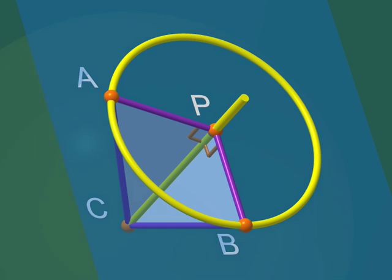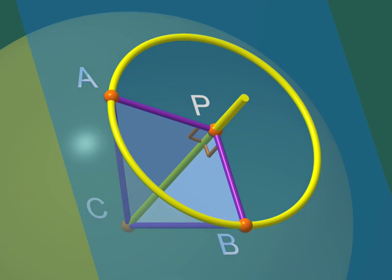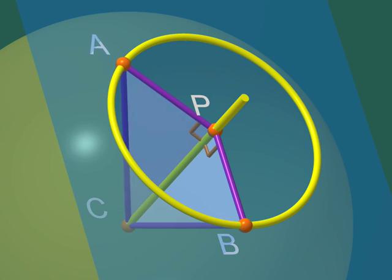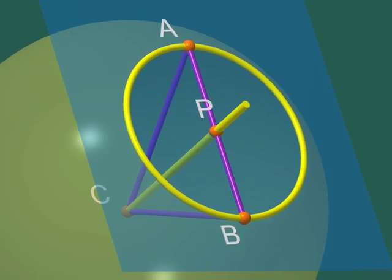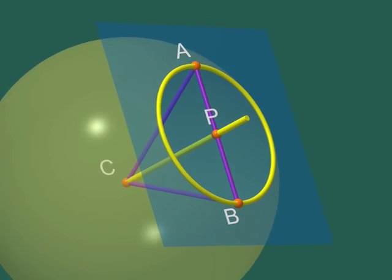This means that the point B also lies on the sphere, since it is at the same distance from C as A. That's it. We have proved that when a plane cuts a sphere, the cross-section is a circle.